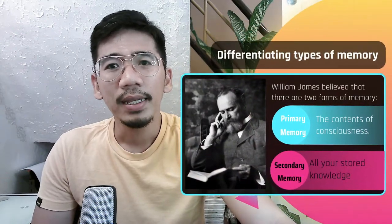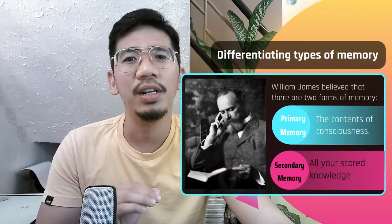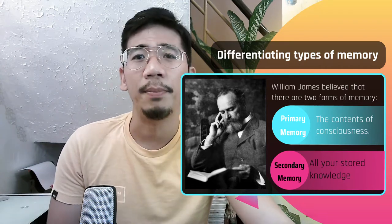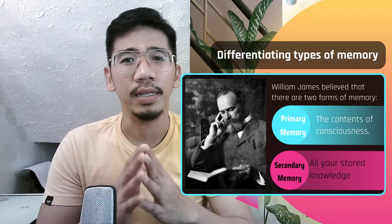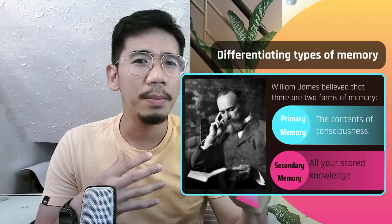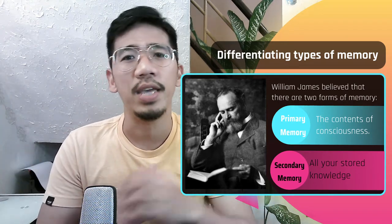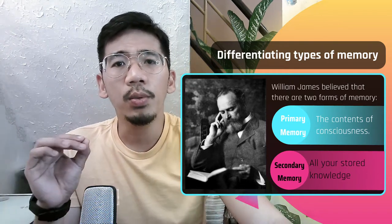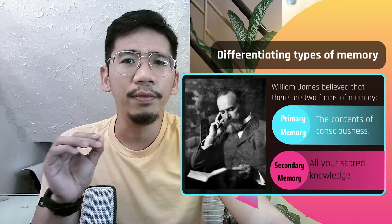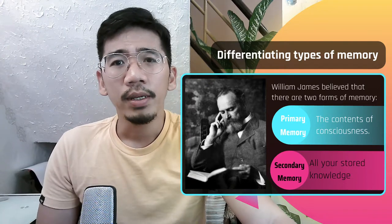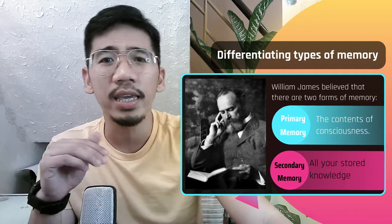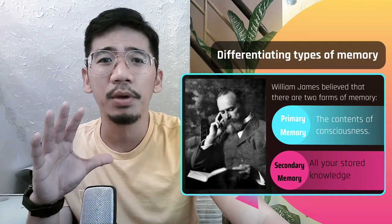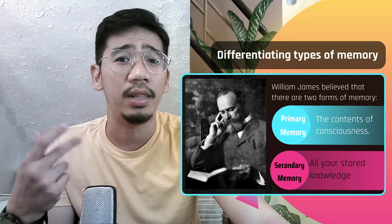Many psychologists in the early part of the 20th century believed that only one type of memory existed. They thought that memory was linked to learning and that after association — that is, links between different ideas in the brain were learned — they formed a permanent part of memory. The only differentiation these psychologists made was that at the beginning of learning, memory traces were weaker than later in learning.